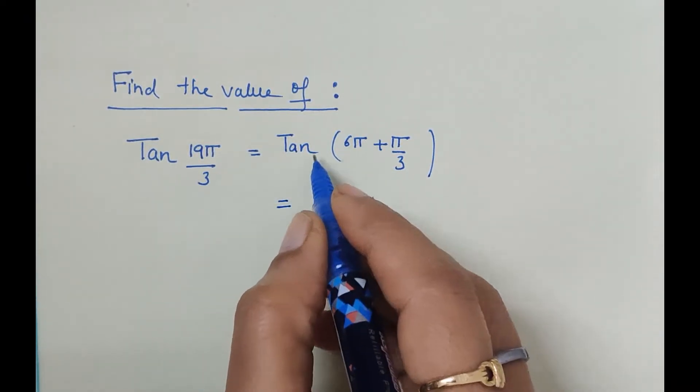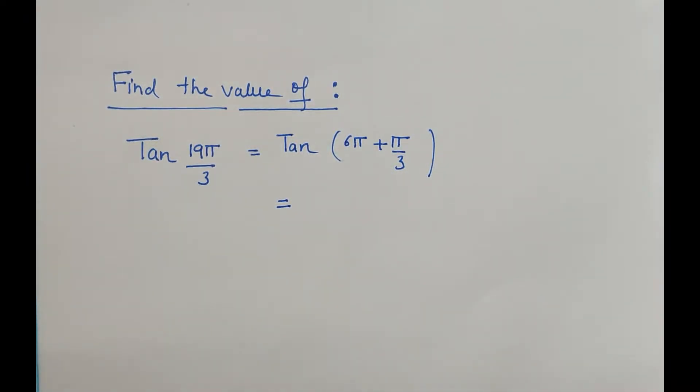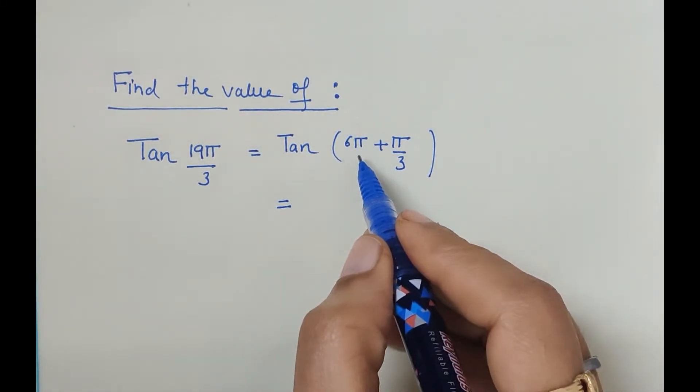As we know, the value of tan is repeated after π interval, after every π, so here again the value will be the same.